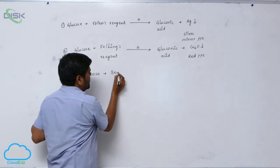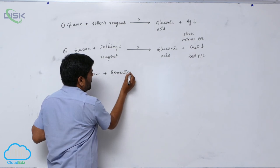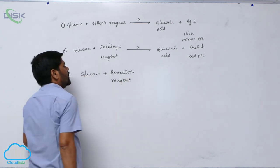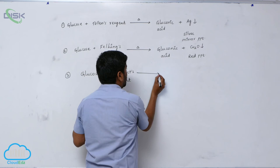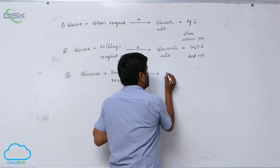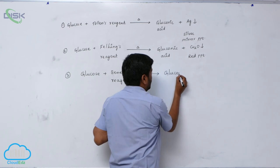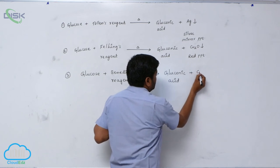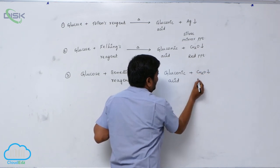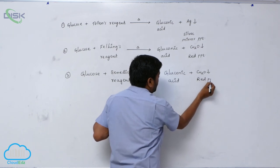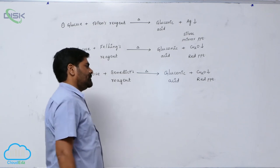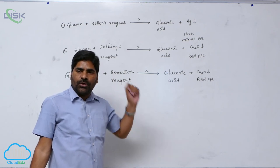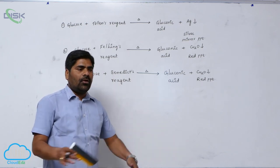The third one is glucose reacting with Benedict's reagent. Benedict's reagent converts glucose into gluconic acid plus cuprous oxide as a red precipitate. So these are the distinguishing tests for the glucose molecule.